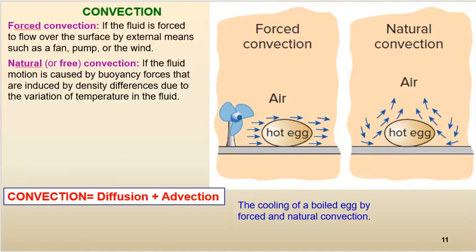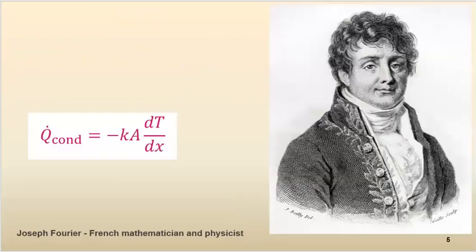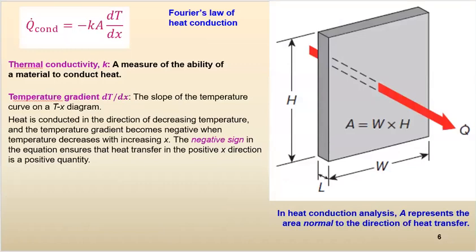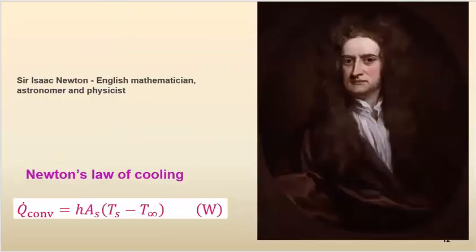For convection transfer, we use Newton's law of cooling. Newton's law of cooling is a bit different from the conduction transfer equation. For conduction we had K; now we have H, and they have different units. Here we also have A, though it refers to a different area. For conduction we had a temperature gradient dT/dx; for convection we have only a temperature difference.